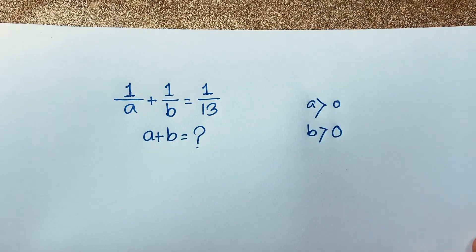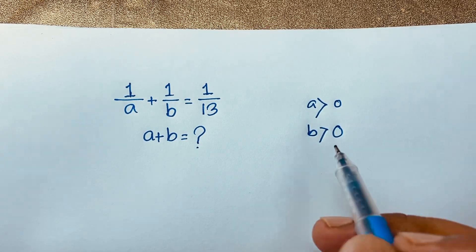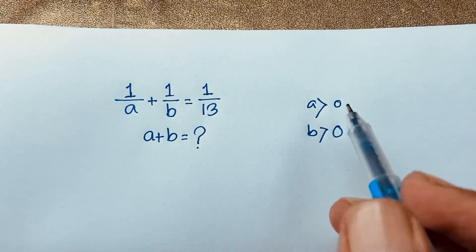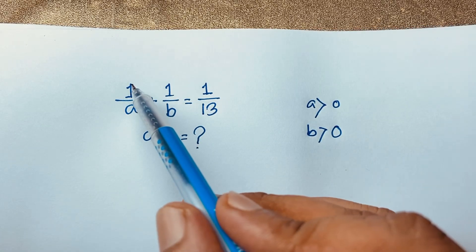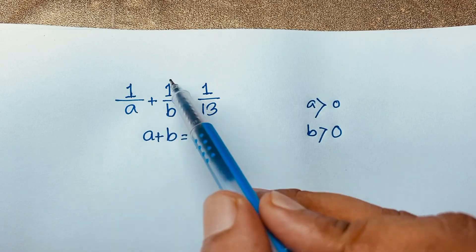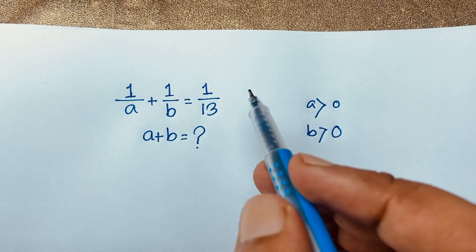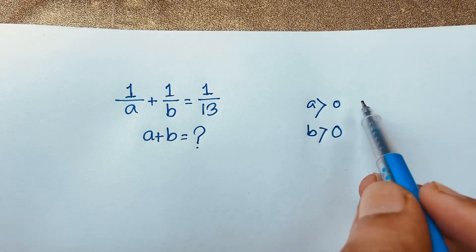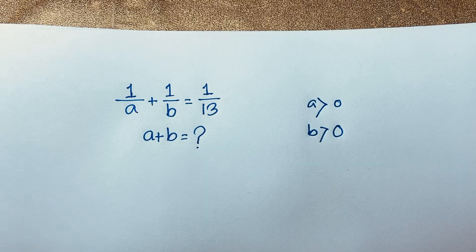Hello everyone, welcome to Russell's classroom. Today we have solved a nice algebraic problem. It is a nice maths Olympiad question. This interesting maths problem: 1 over A plus 1 over B is equal to 1 over 13. A plus B is equal to what? Here A is greater than 0 and B is greater than 0.